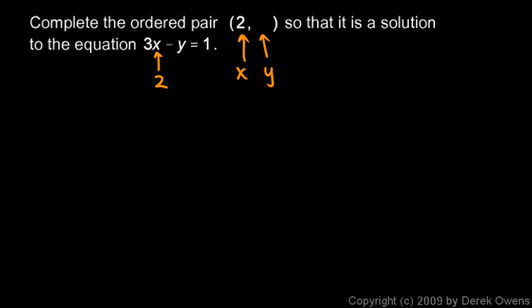So instead of 3 times x minus y equals 1, I'll say 3 times 2 minus y equals 1. And now we need to try to find this y value. Well the 3 times 2 right here is 6 so I can rewrite this equation as 6 minus y equals 1.